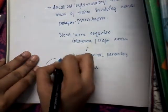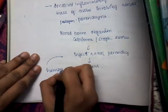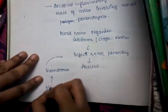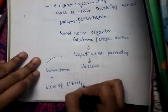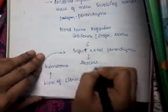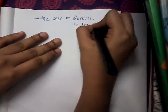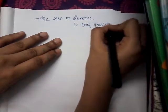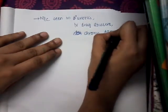Sometimes this condition also results from infection of a hematoma following a blow or injury to the kidney. When there is infection of the renal parenchyma after a hematoma, it also leads to abscess formation. It is most commonly seen in diabetics, IV drug abusers, debilitated patients, those with chronic disease, and immunodeficiency.